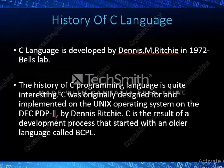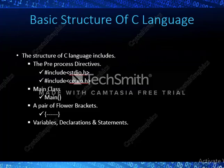Coming to the history of C language, it was developed by Dennis M. Ritchie in the year 1972 at Bell Labs. It was originally designed and implemented on the Unix operating system.